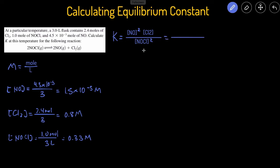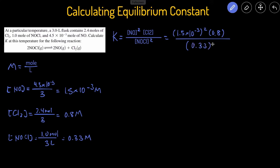Now that we have the concentrations, we can plug them in. The concentration of NO is 1.5 × 10⁻³ — this should be negative 3 — squared, times the concentration of Cl₂, which is 0.8, divided by the concentration of NOCl, which is 0.33, squared. Entering that into the calculator gives us K = 1.65 × 10⁻⁵. This is the same approach as the previous problem, except we first had to calculate concentrations by dividing moles by the total liters, which was 3.